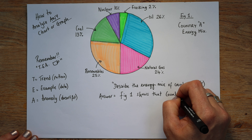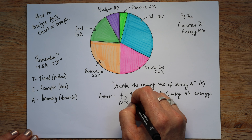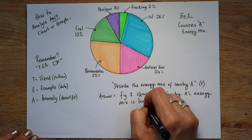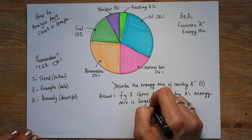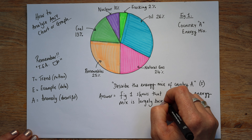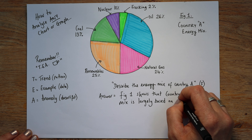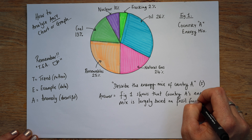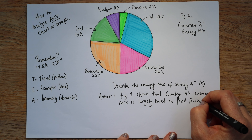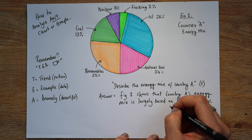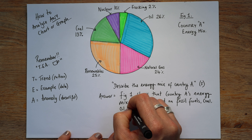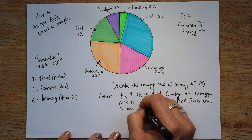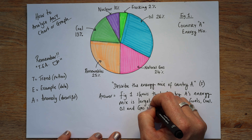So if this was a four marker — or it might be a three marker — it would be something like: 'Describe the energy mix of country A.' Something like that, and it might be worth three or four marks.